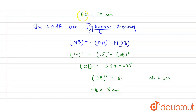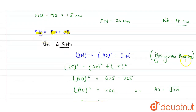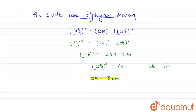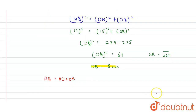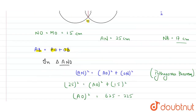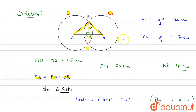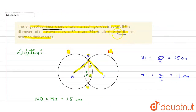Now that I have the values of AO and OB, I can find AB. AB equals AO plus OB, so AB equals 20 plus 8, which gives AB equals 28 centimeters. AB is the distance between the two centers, and the final answer is 28 centimeters.